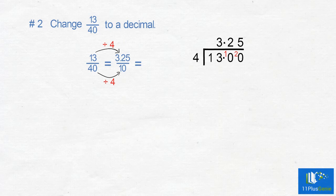We must now divide the numerator by 10. So we move the decimal one place to the left, which gives us 0.325. 13 out of 40 equals 0.325.